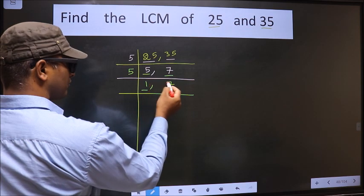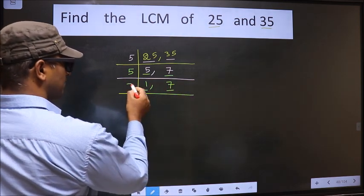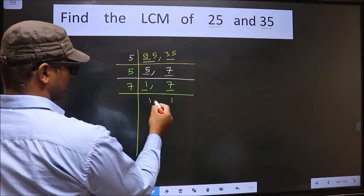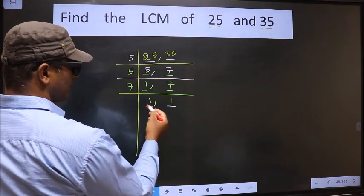We got 1 here. So focus on the other number. That is 7. 7 is a prime number. So 7 divides 7. We got 1 in both places.